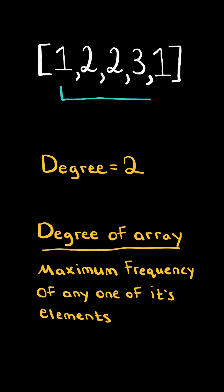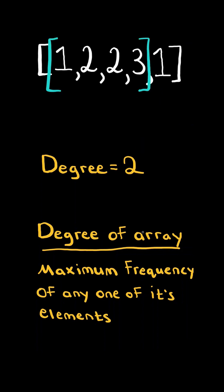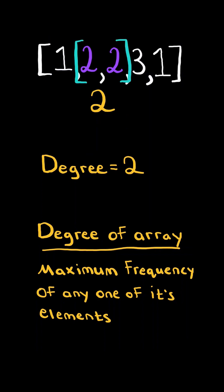Now, find the smallest possible length of a contiguous subarray that has the same degree as the array. For example, consider the contiguous subarray 1223. It has a degree of 2, which is the same as the original array, but it's not the smallest subarray we can create with a degree of 2. Consider the subarray 22 — it is the smallest contiguous subarray with the same degree, so we return its length, which is 2.